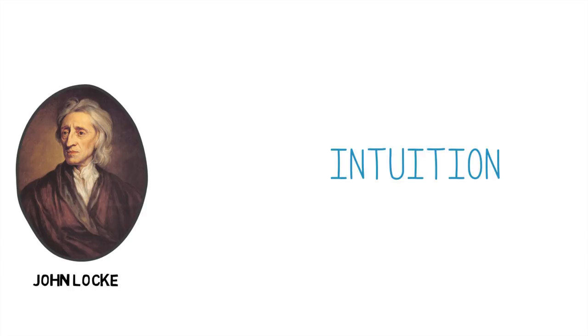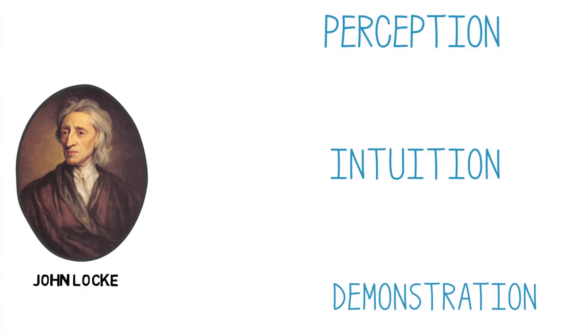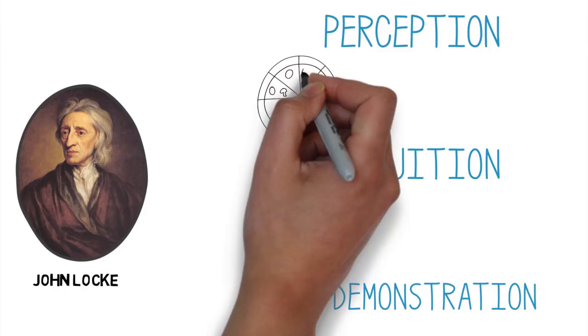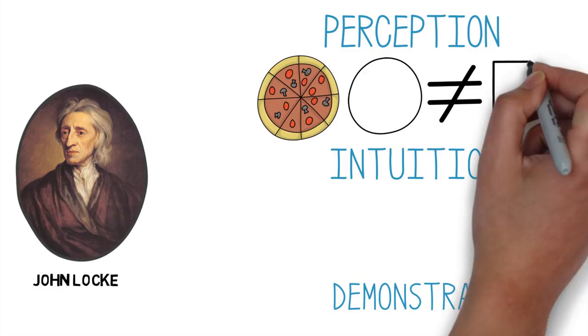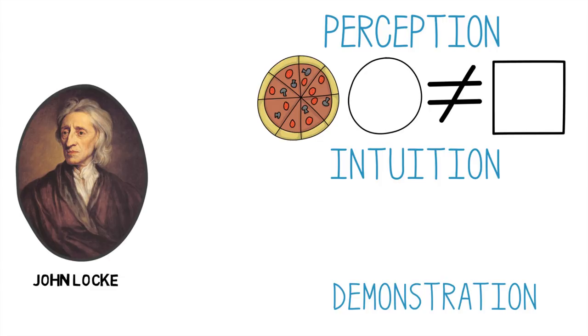Locke contrasts intuition to sensory perception on one side and to demonstration on the other. Sensory perception, he notices, is always about particular things. You see this pizza in front of you right now. Maybe you see that this pizza is round. But we aren't restricted to making judgments about particular things.